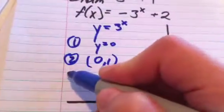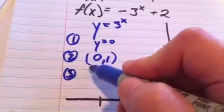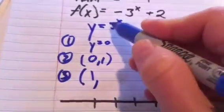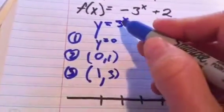And then if you want one more point, it'll go through (1, 3) in this case, whatever that base is.